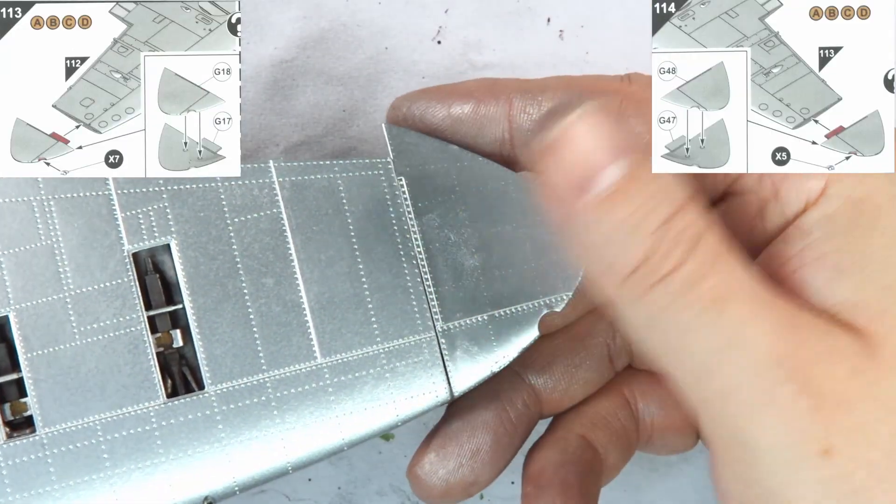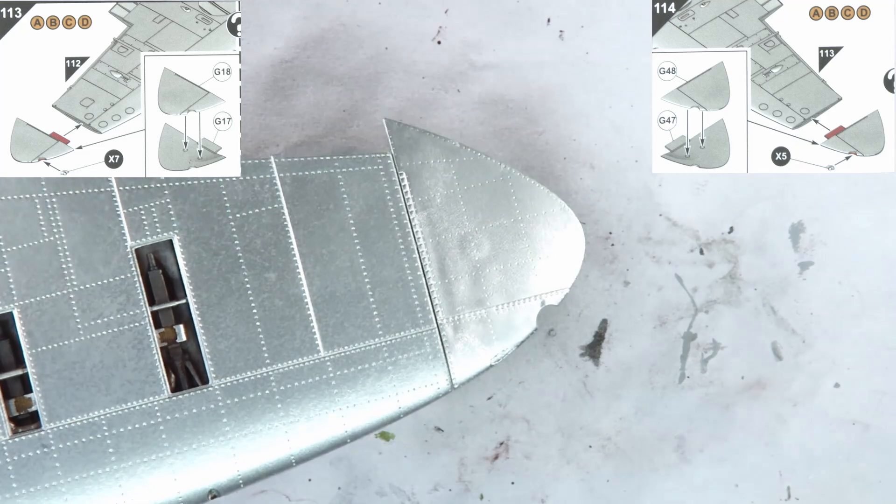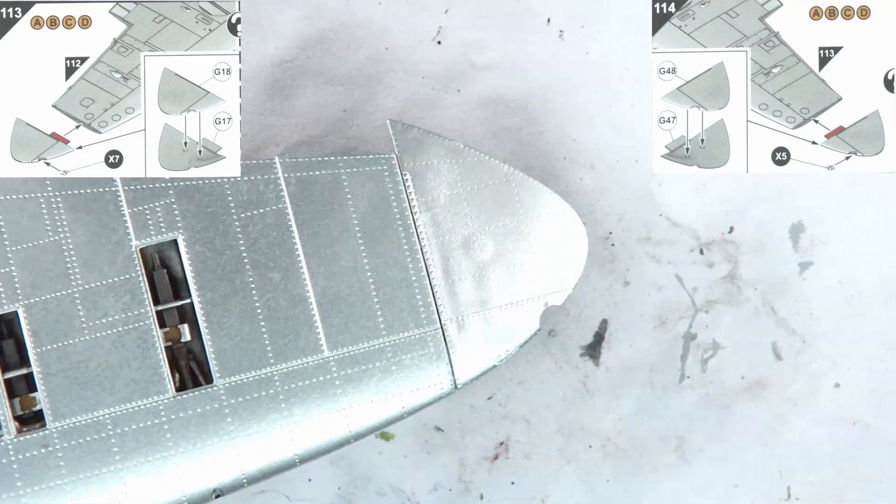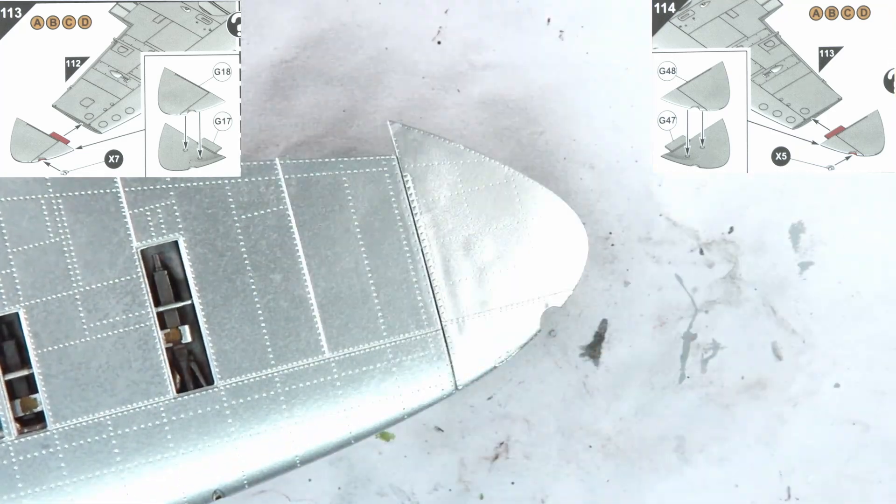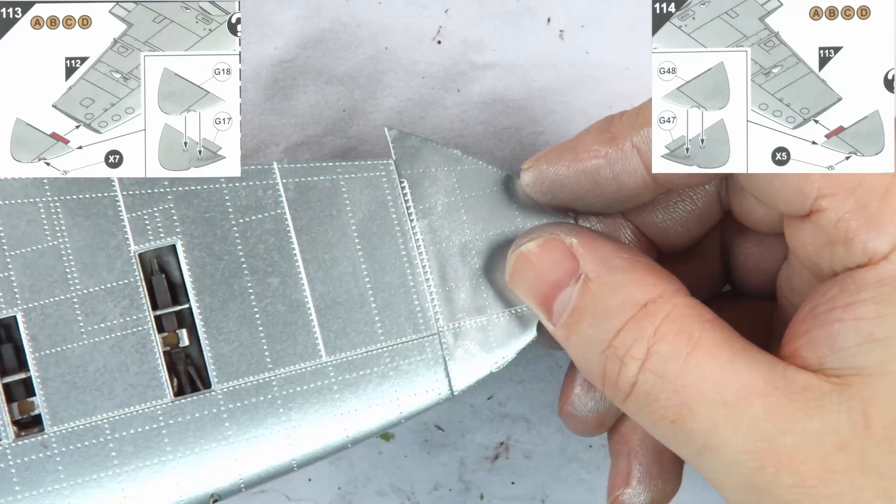Steps 113 and 114 bring us to the wing tips, a part that I usually dread because of the possibility of misalignment, but I was personally surprised by how well these seated and they were secured with Tamiya extra thin with no issues.